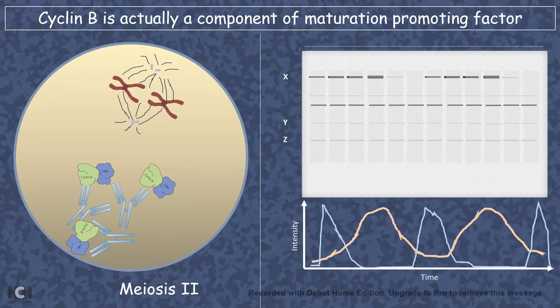Indeed, this experiment suggested that cyclin B is actually a component of maturation-promoting factor. That was amazing at that point, when experiments from two completely different model organisms, done by two completely different types of scientists, a cell biologist and a biochemist, together lead to the discovery of this amazing molecule, cyclin B, which is a component of maturation-promoting factor.